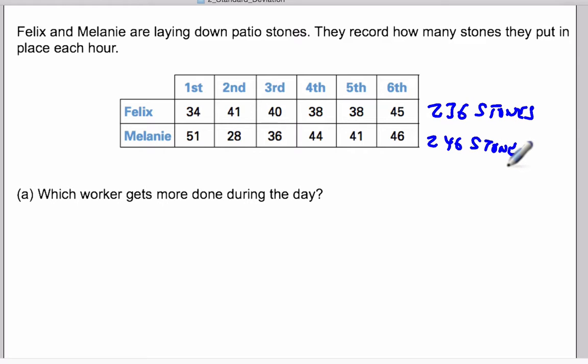If we calculate the average—we could say that this is a sample, so we're going to calculate the average or the mean of this data for Felix. His average is going to be 236 divided by 6, and that will work out to be 39.3 repeating, so he puts down 39 and a third patio stones each hour.